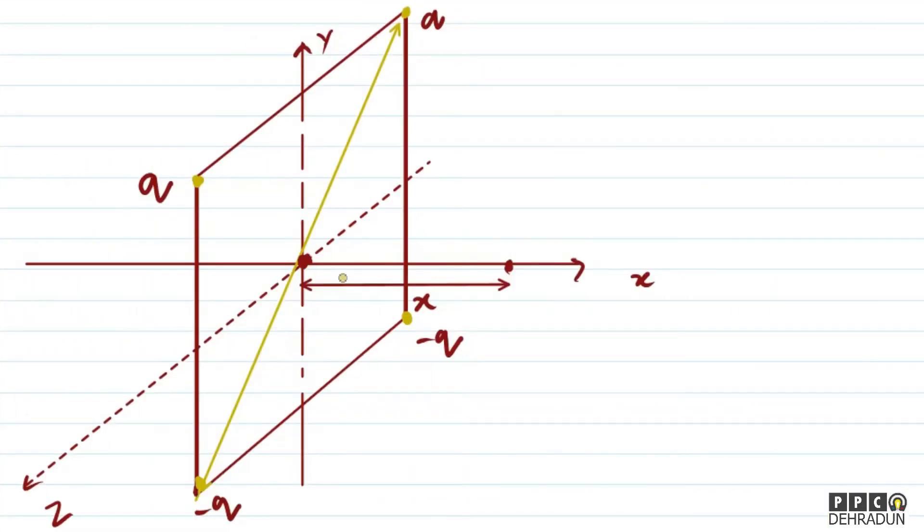First of all, if I look at minus Q and plus Q together, I have a dipole. And for this dipole, this point P is an equatorial point.